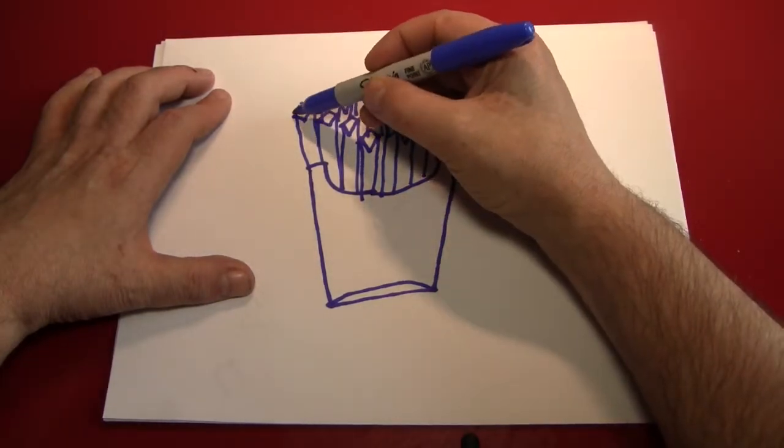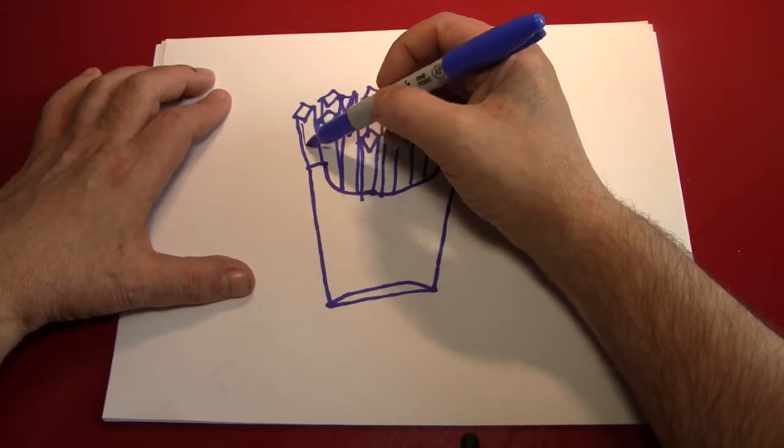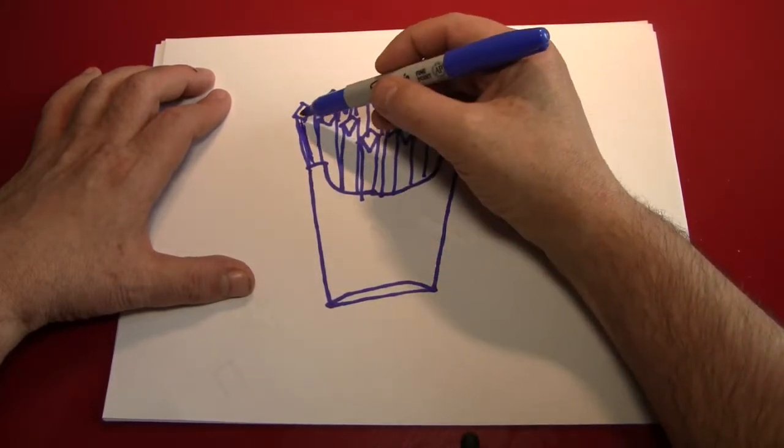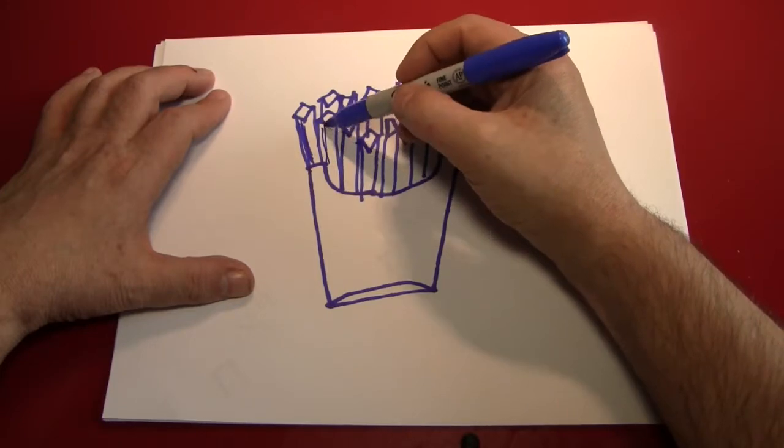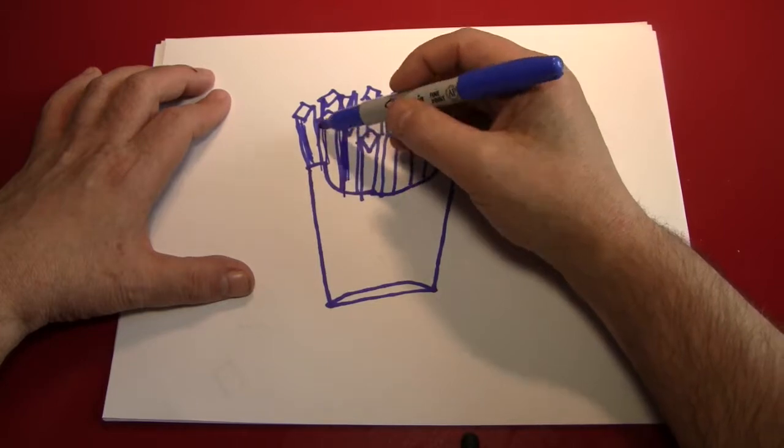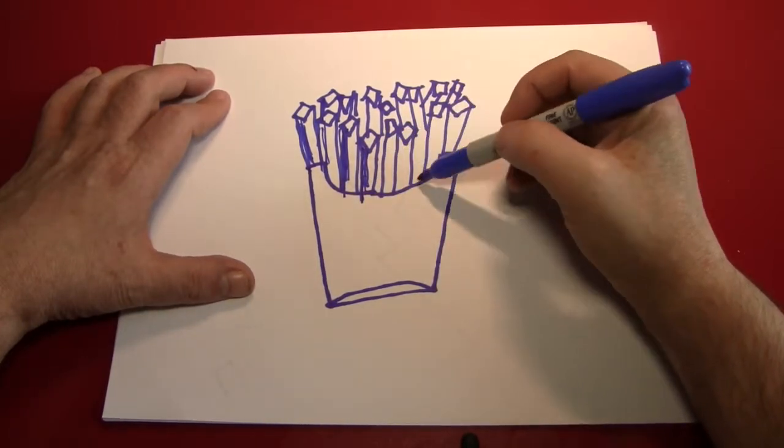And you can use the point, this little bottom part here, to create where the shadow will be. Do you see how you just color into the left of those little points? And that'll give your french fries a little bit of depth. It's not a fancy trick, but there you go.